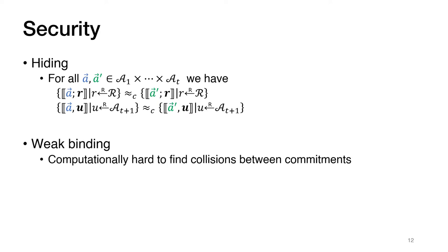The augmentable commitment scheme must satisfy three security properties. The hiding property states that a randomly blinded commitment to any set of values is computationally indistinguishable from a randomly blinded commitment to any other set of values belonging to the same input spaces—meaning that randomly blinding a commitment hides its contents. A similar property holds with respect to appending random values. The second property is called weak binding: it should be computationally hard to find collisions between commitments to two sets of values.